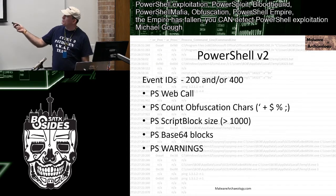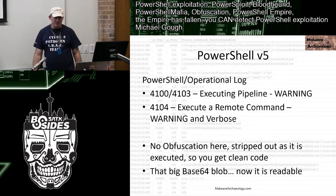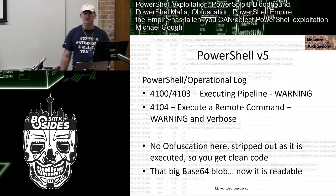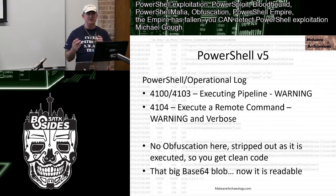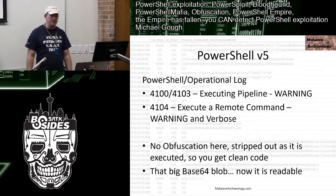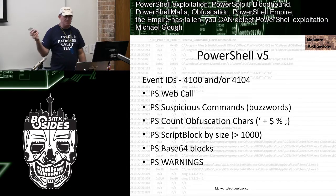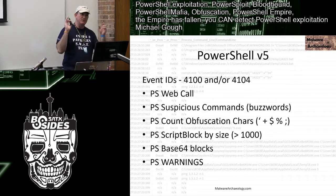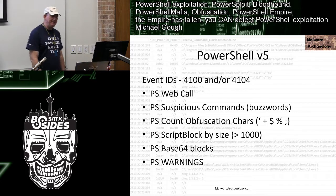For PowerShell v2, look at the 200s and 400s: web calls, obfuscation characters, script block size greater than 1,000, Base64 blocks, and warnings. For PowerShell v5, look at the 4100s and 4103s — they trigger a warning if there's anything fishy, focus on those. Look at size, ticks, counts. In the 4104, Base64 is decoded — now suddenly it's completely readable. De-obfuscation happens automatically. Now I can do buzzword searches on what was previously encoded. Warnings in 4100s and 4104s matter.